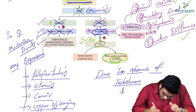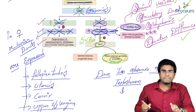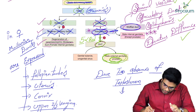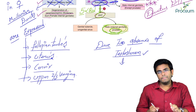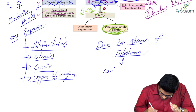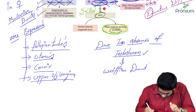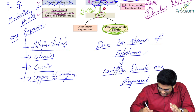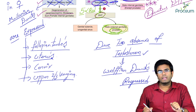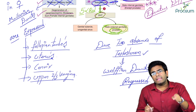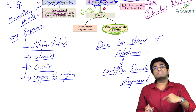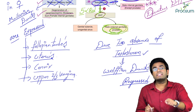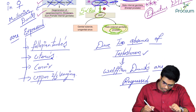Due to the absence of testosterone in a female, the Wolffian ducts are regressed. Testosterone is what helps in the expression of Wolffian ducts, but due to its absence in a female, the Wolffian ducts regress. To summarize: Wolffian ducts are regressed in a female due to absence of testosterone; Mullerian ducts are regressed in a male due to presence of Anti-Mullerian Hormone from Sertoli cells.